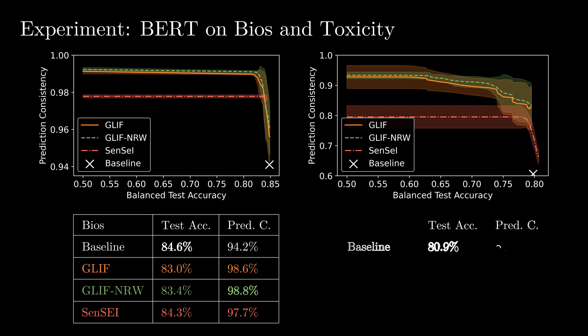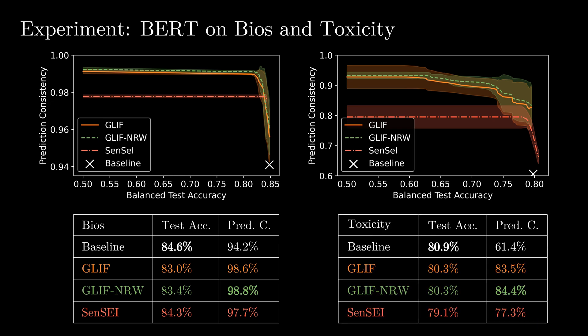On the toxicity dataset, we observe a similar behavior where we improve by 23% over the baseline and by 7% over Sensei. At the same time, our model test accuracy drops by only 0.6%. Now, I will give the word to Deb, who will discuss the theoretical aspects of our work. Thank you, Felix.